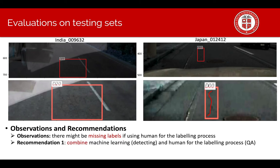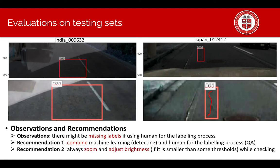The observation is that there might be missing labels if we only use humans for the labeling process. The recommendation is to combine machine learning and human in labeling process. Let's say machine learning is going to detect the damage and human is going to do the QA process. However, we always need to zoom and add brightness if it is lower than some threshold in order to avoid missing labels.